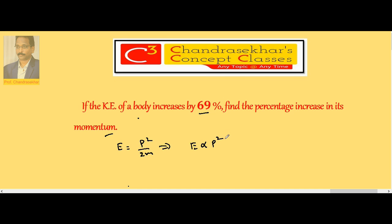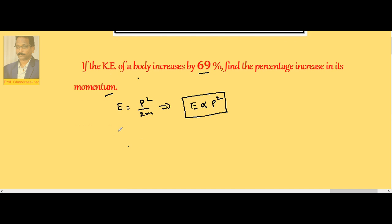So using this relation it is possible to calculate. Now I can write e2 by e1 as p2 by p1 whole square. Whenever we are dealing with percentages, always take initial values as a hundred, so p1 equals hundred and correspondingly e1 equals hundred. Here e2 is known—increases by 69, so total becomes 169, p2 unknown.